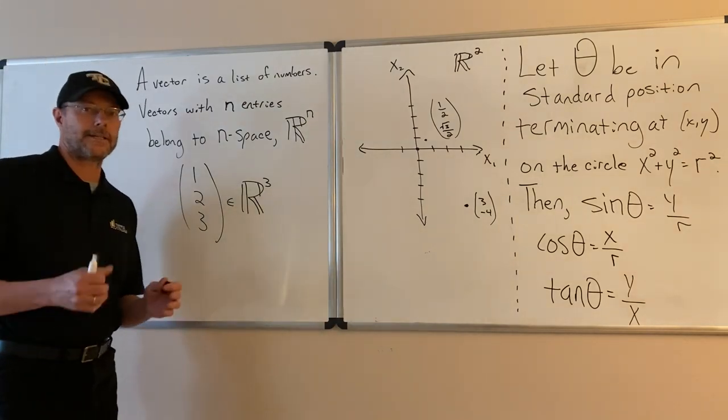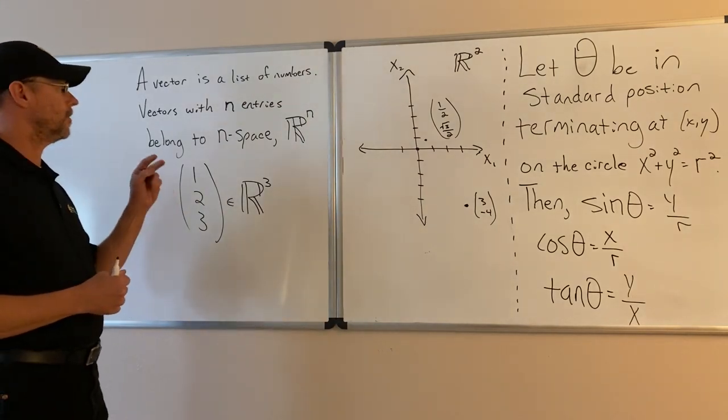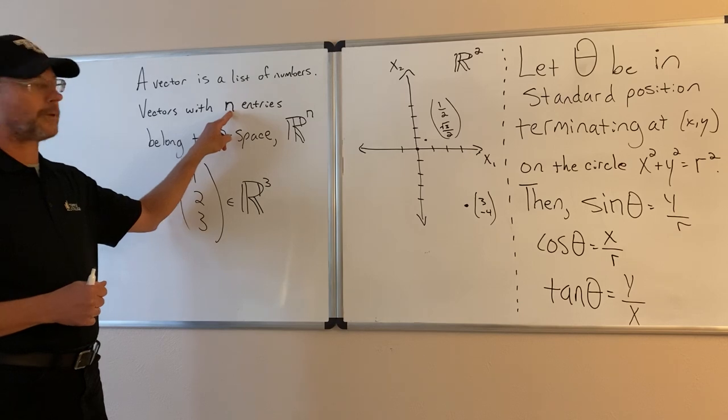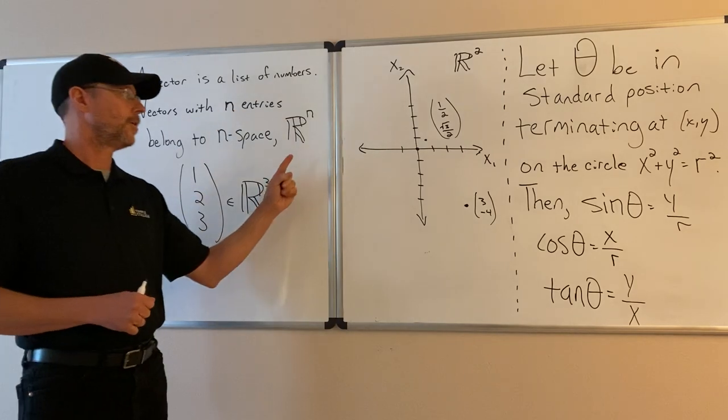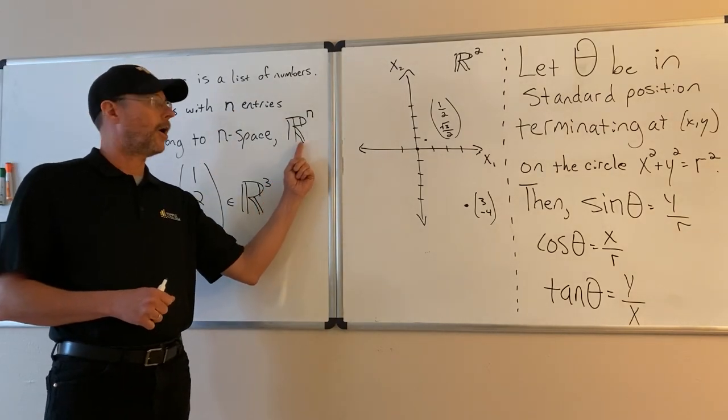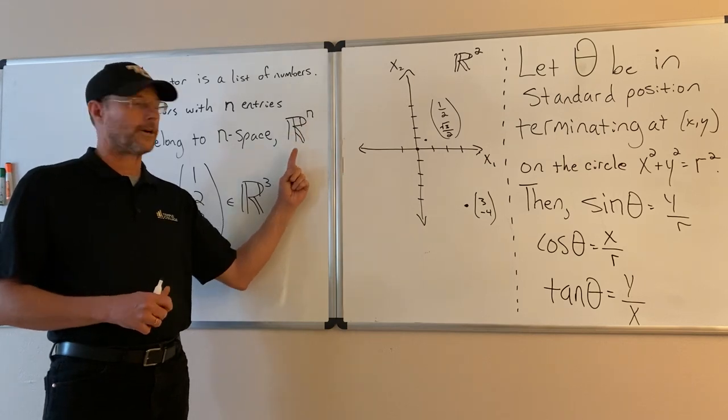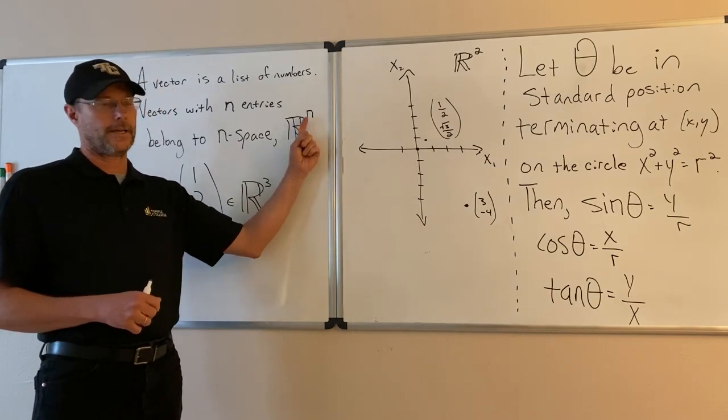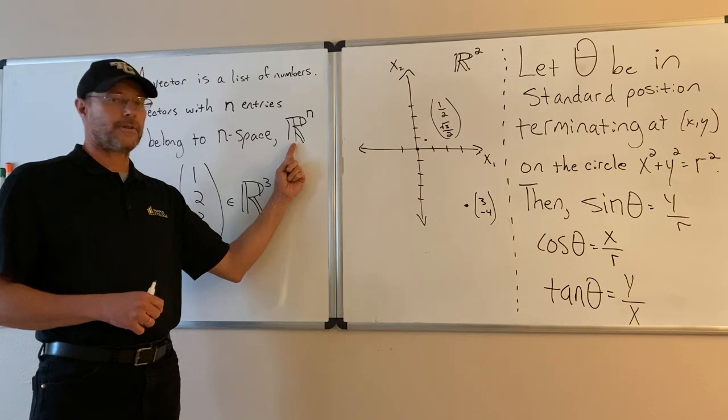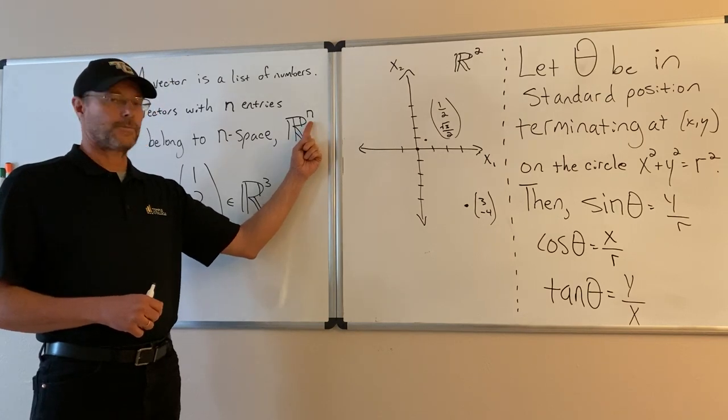A vector is a list of numbers. So a vector with n entries belongs to n space denoted R^n. We read this R-n, not R to the n, just R-n. This is Math Euclid font and this is a superscript n.